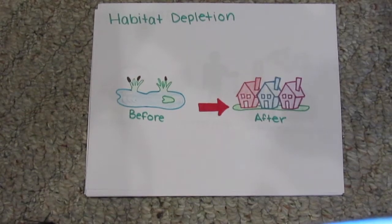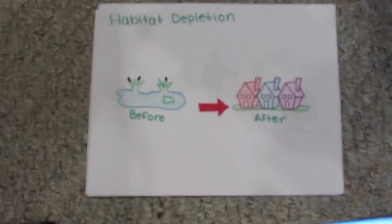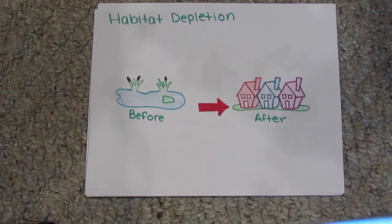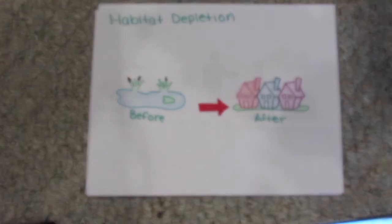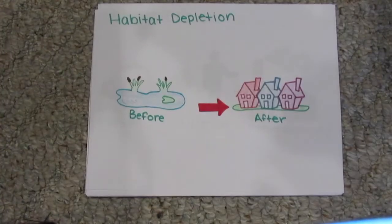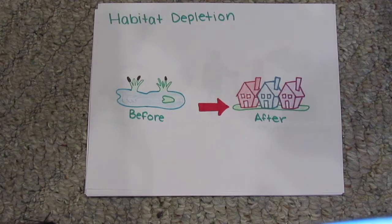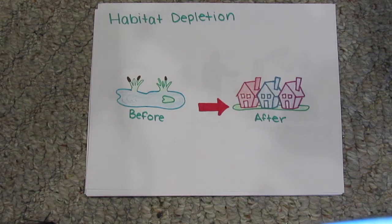Habitat depletion, also known as habitat destruction, is the greatest threat to species. The world's swamps, lakes, forests, plains, and other habitats are continuing to disappear. They are being harvested for human consumption and are being cleared to make room for agriculture, roads, housing, pipelines, and other industrial development.